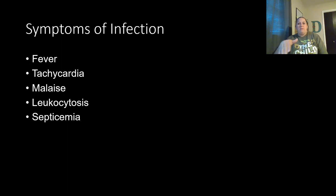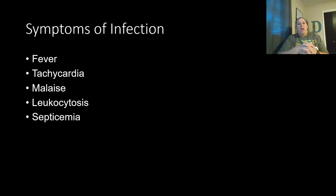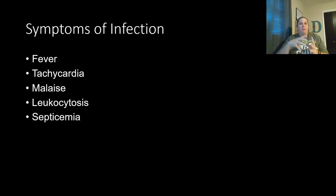No matter what infection we're looking at, certain symptoms commonly appear: fever, tachycardia (increased heart rate), and malaise — where you just feel icky or blah. Leukocytosis — an increased level of white blood cells — can be seen in blood work. If the blood starts to get infected with the pathogen or a toxin, we can see septicemia — where the blood becomes infected with the pathogen or a toxin from the pathogen.